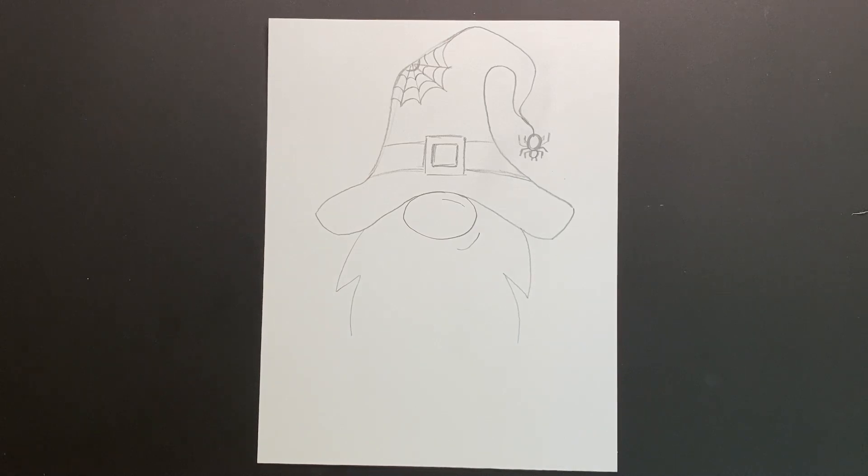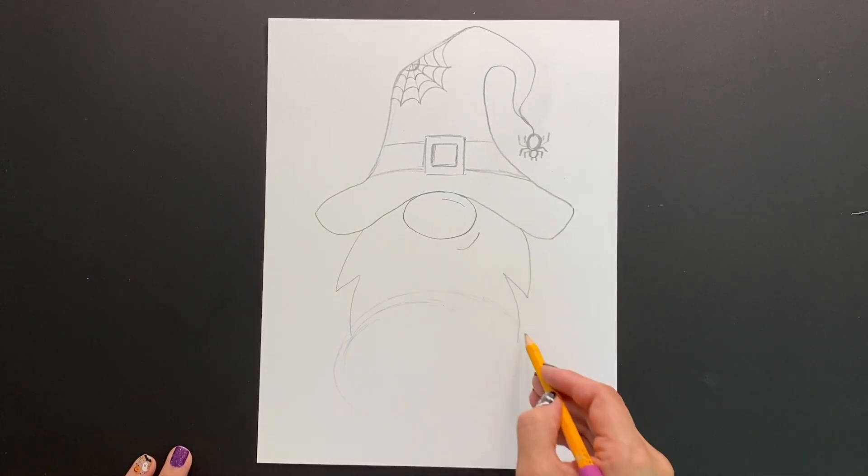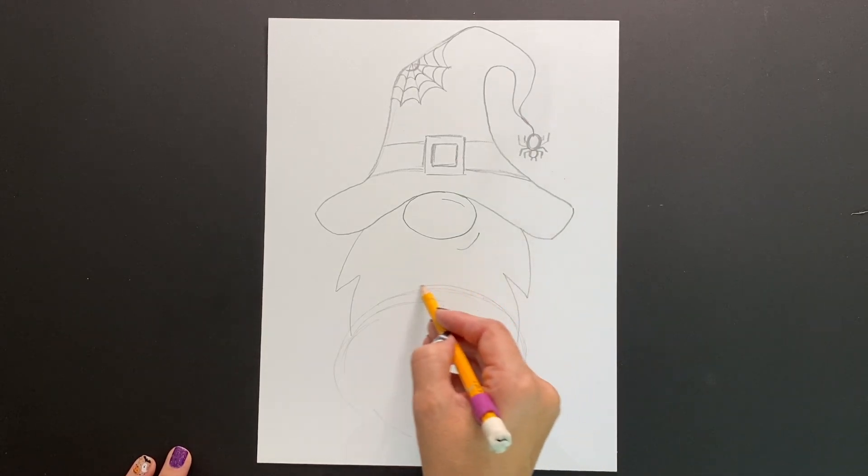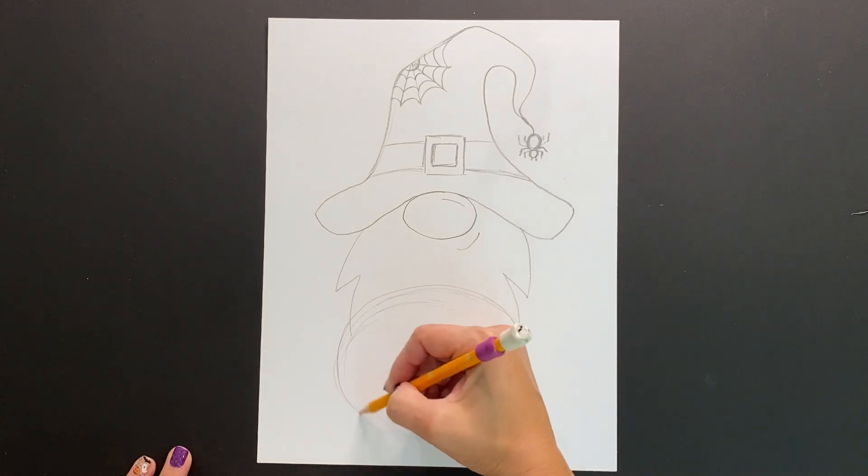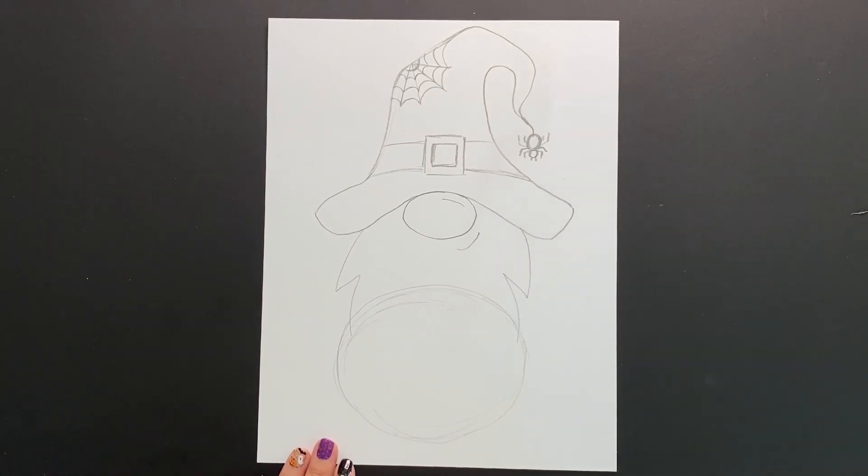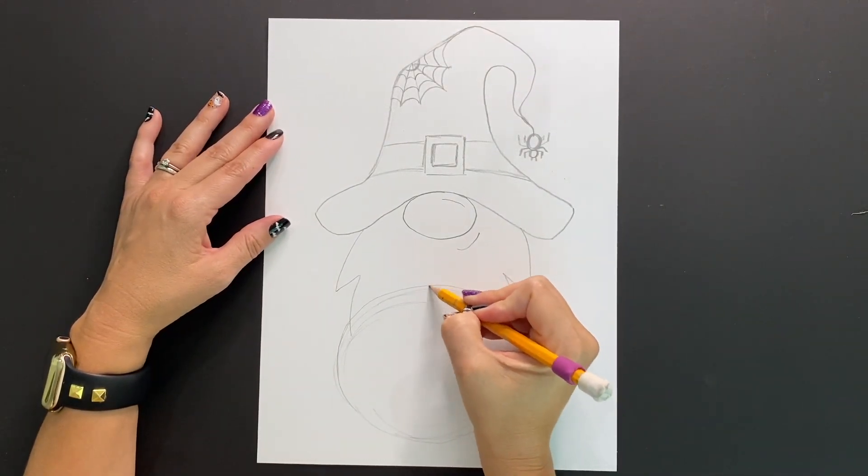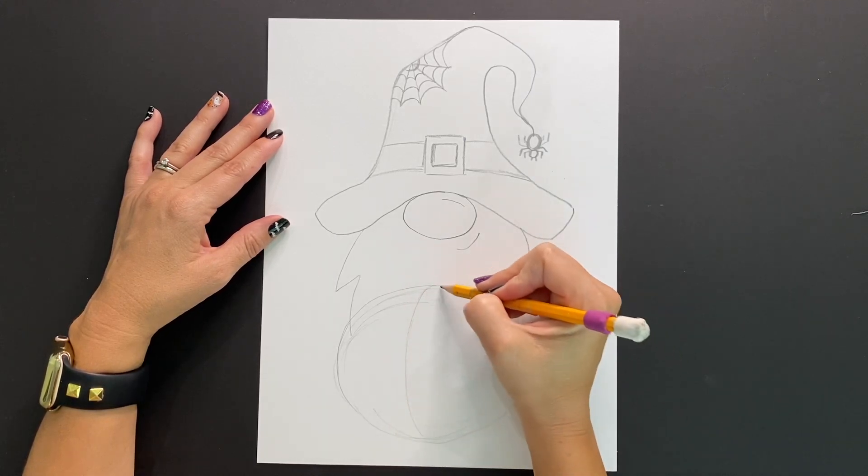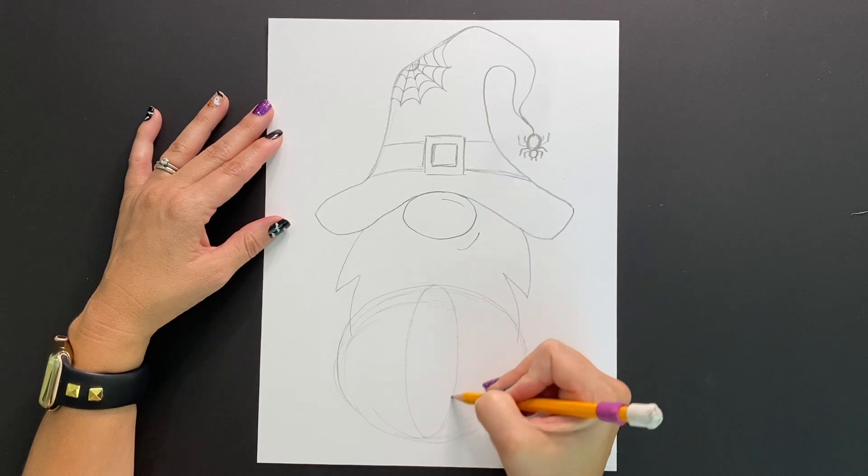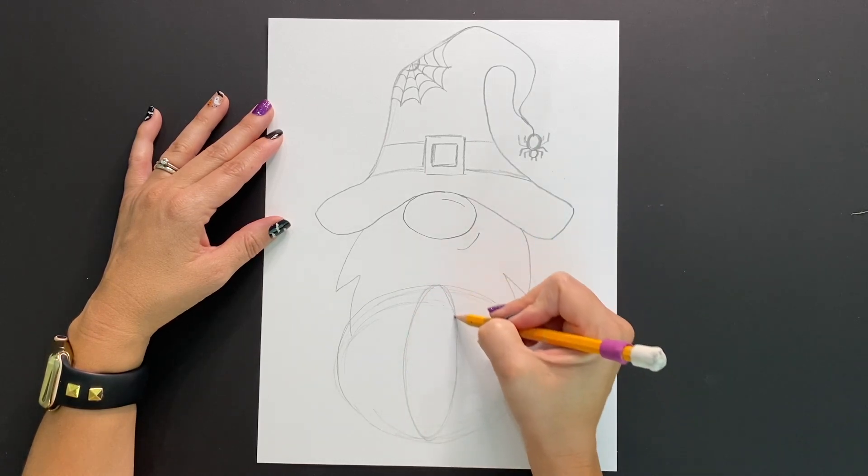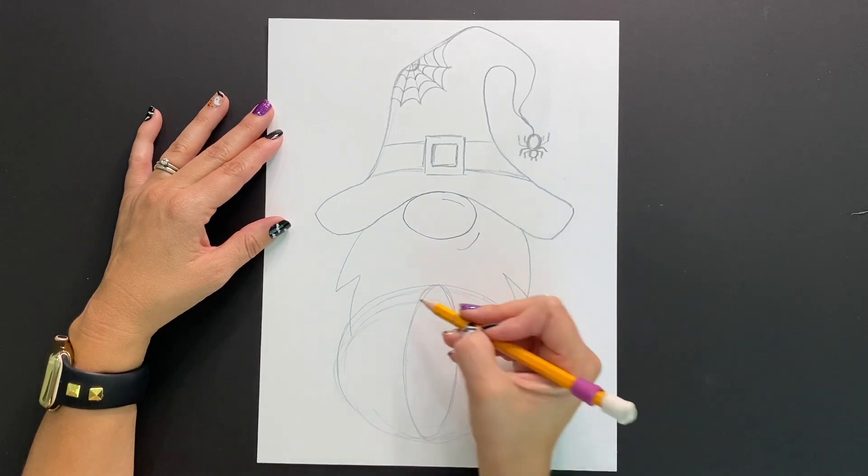Now I've left some room at the bottom to be able to draw a very large pumpkin jack-o-lantern that my gnome is going to be holding. So I'm going to lightly sketch in a circle shape. This is just going to be a guide to help me get the size and shape that I want. So just feather pencil in a light line of a circle shape. Don't make it too dark because you'll be erasing part of this.